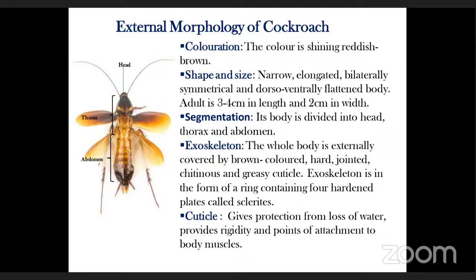The ring is formed of four sclerites. On the dorsal side it is called tergum, on the ventral side it is called sternum, and on the lateral sides they are called pleurites or pleura. The cuticle gives protection from water loss and provides rigidity and points of attachment for body muscles.